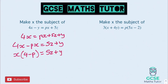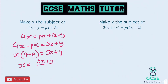And divide by the bracket, so x equals 5z plus y over 4 minus p. It was in that bracket there — 4 minus p. There's your final answer for that one.